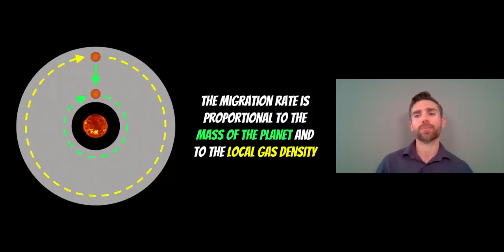The actual migration rate is proportional to the mass of the planet and the local gas density. So for example, if you had a larger planet you'd expect it to migrate in faster, things like that. So they're the sort of things which will dictate how fast it's going to migrate inwards.